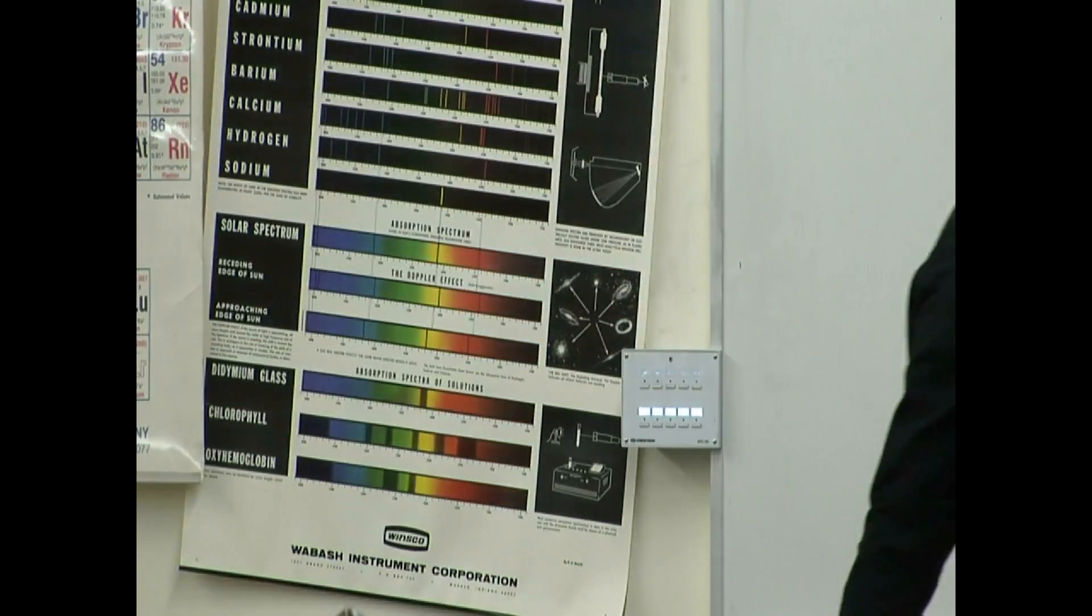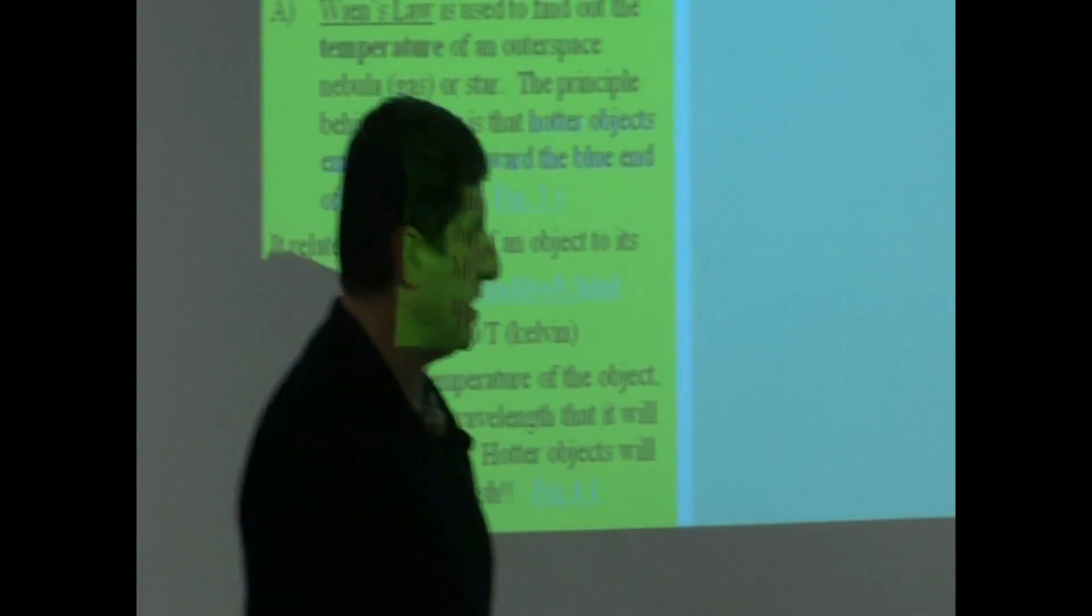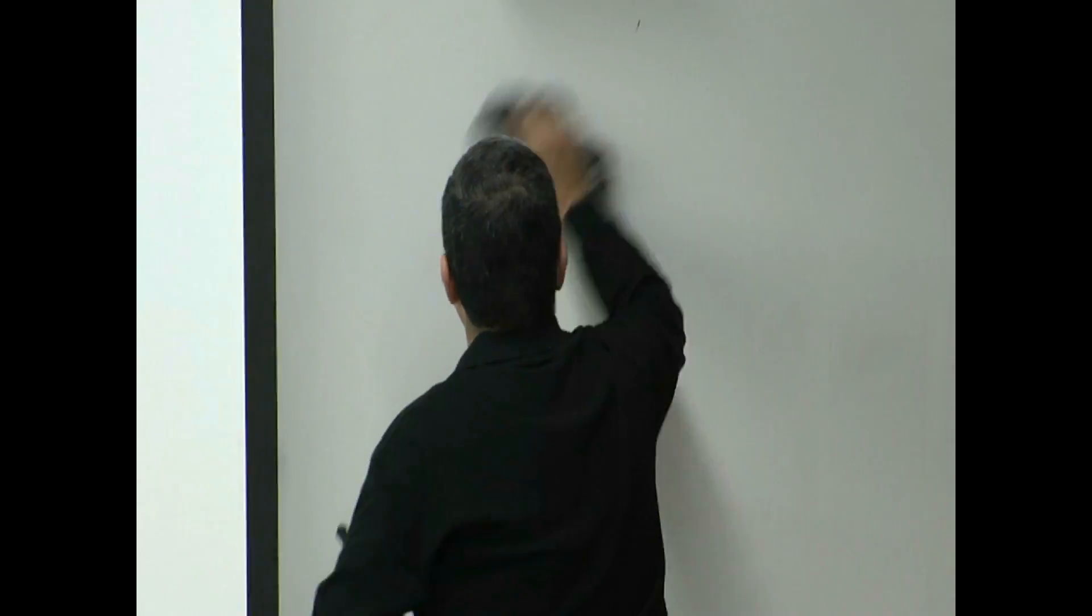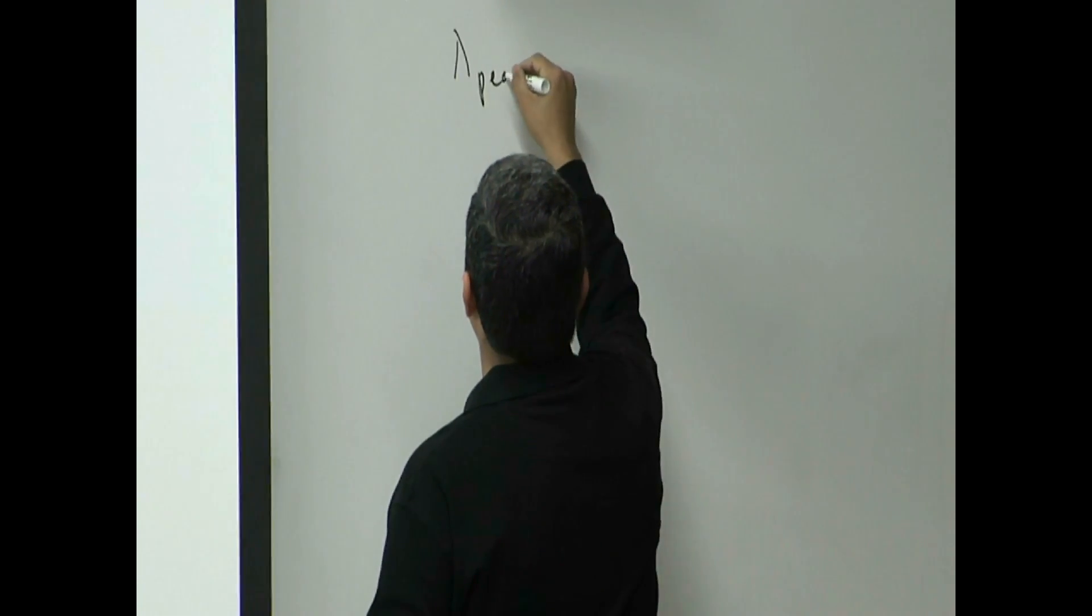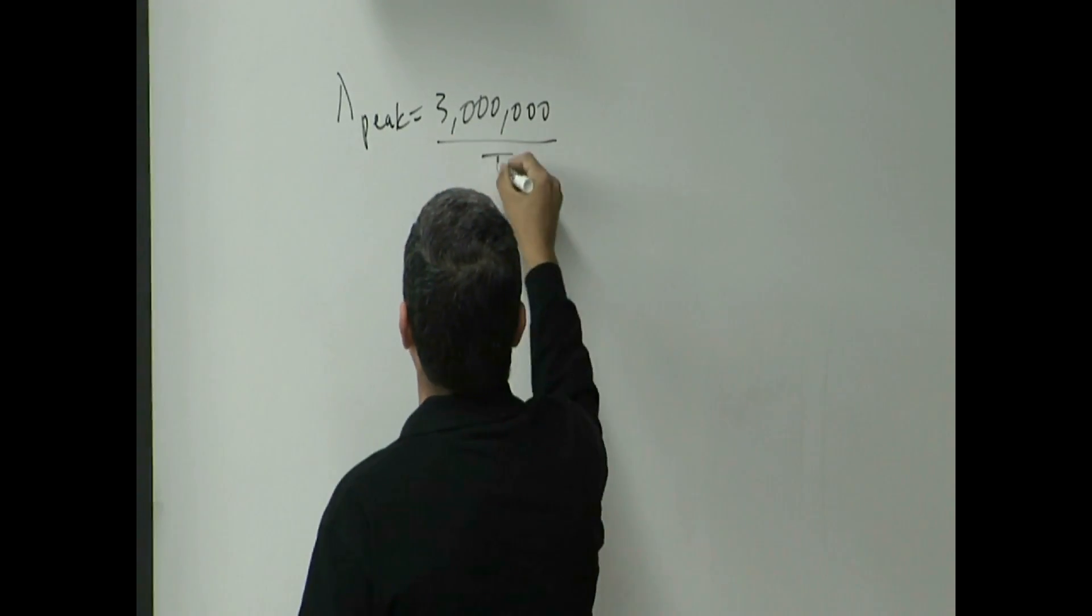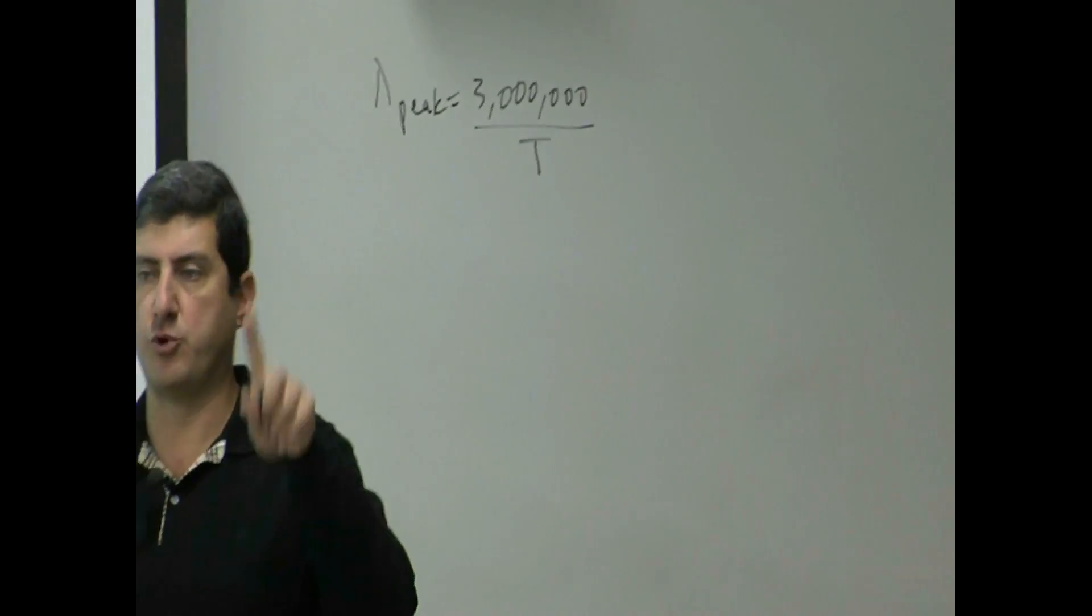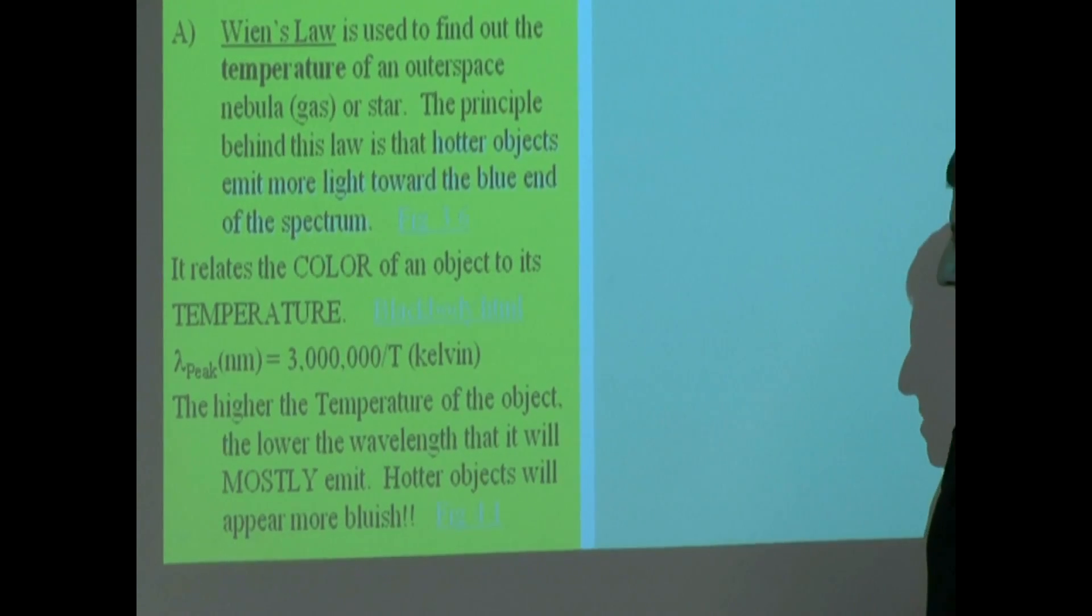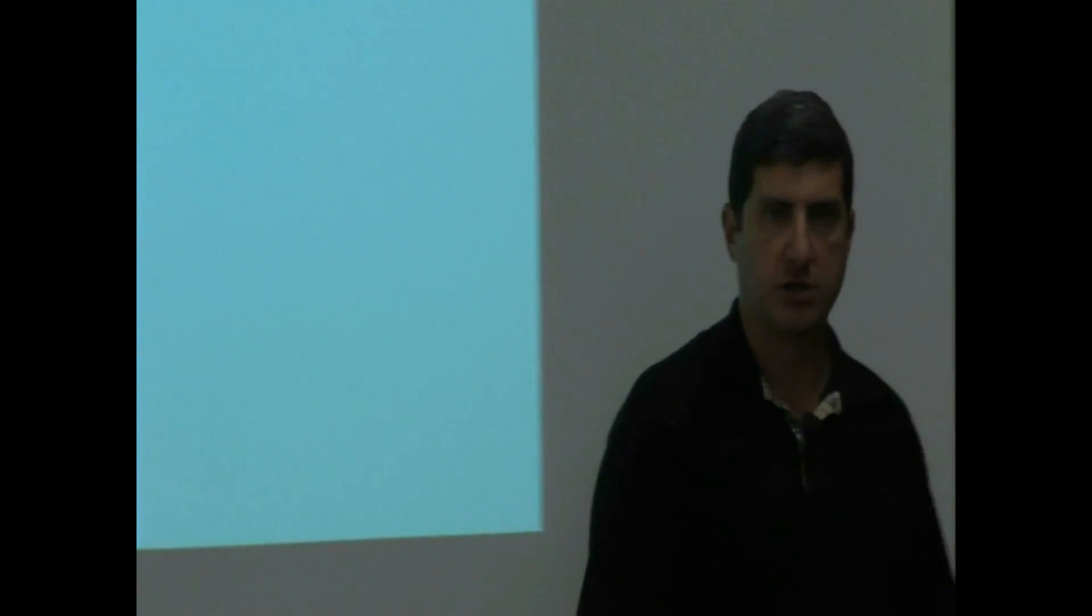So the equation that describes this is known as Wien's Law. Lambda peak equals 3 million divided by T. You see how they're inversely proportional to each other? The higher the temperature of the object, the lower the wavelength that it will mostly emit. Hotter objects will appear more bluish.